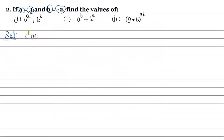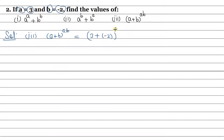Now the third part. We have a plus b whole to the power ab. A plus B means 3 plus minus 2, and the power ab means 3 times minus 2. Inside the bracket, 3 plus minus 2 gives 3 minus 2.